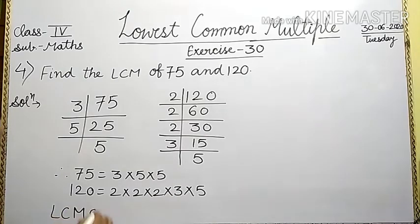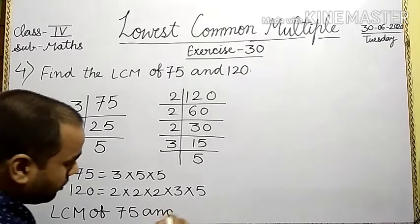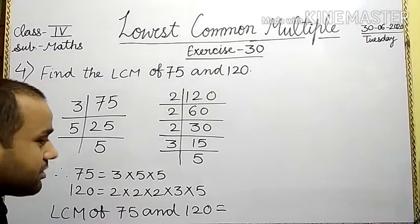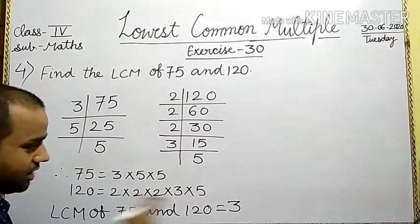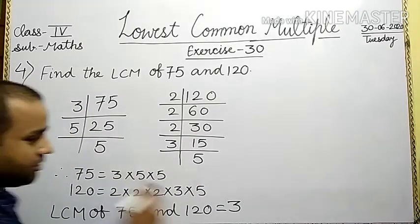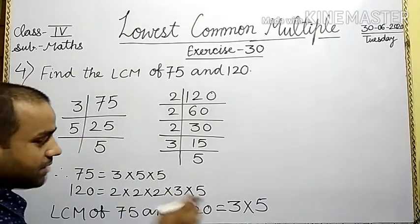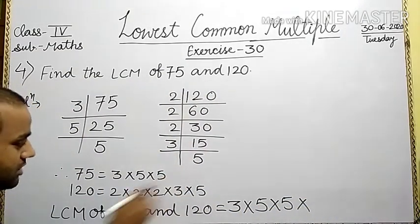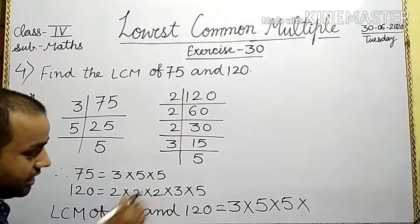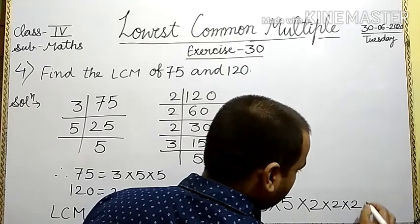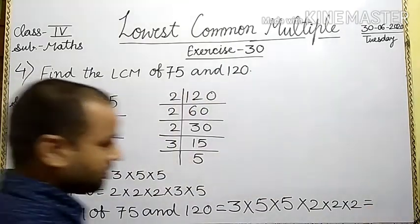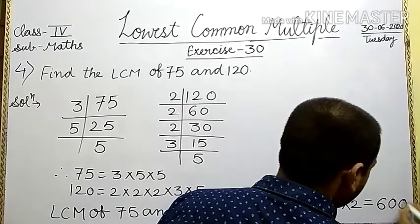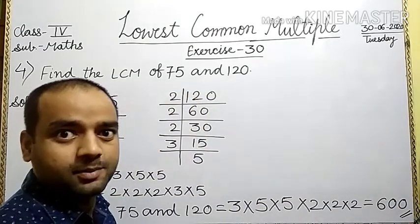The LCM of 75 and 120. And lastly, we find the product: 5 times 10 is 50, 5 times 15 is 75... multiplying all prime factors with maximum occurrence: 2 into 2 into 2 into 3 into 5 into 5. The required answer is 600. Is it clear?